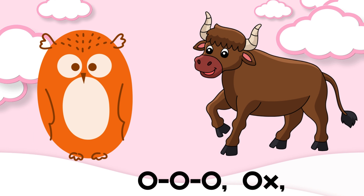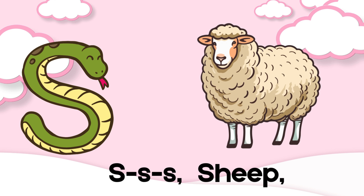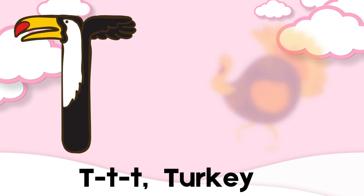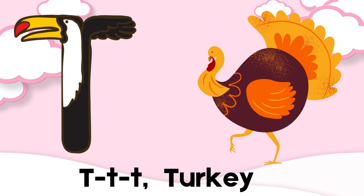Q is for quail, R-R-R-R. R is for rabbit, S-S-S-S. S is for sheep. T-T-T-T, T is for turkey.